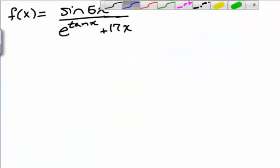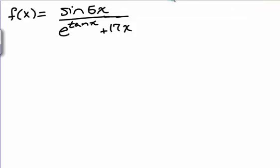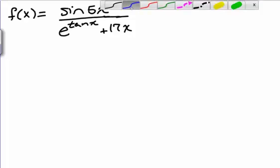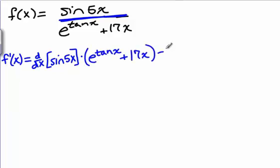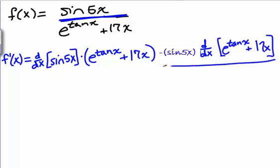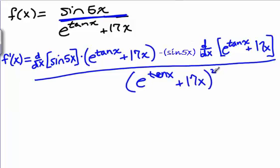That was kind of complicated, so let's try one more example just to make sure that the idea of working from the outside in is clear to you. In this example, we're looking at sine of 5x divided by e to the tangent of x plus 17x. The outermost thing in this problem is the division sign. So f prime of x is going to be: the derivative of the top — I'll make a note to myself that I need to take this derivative — times the bottom, minus the top times the derivative of the bottom — again just a note that I need to take that derivative — all divided by the bottom squared. We have two derivatives that we still need to take, and once we figure those out and stick them in, we'll be done.